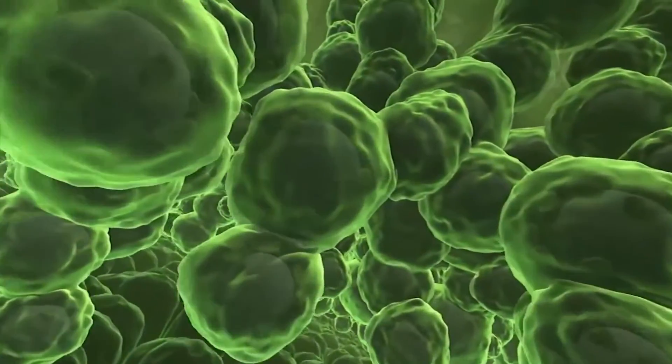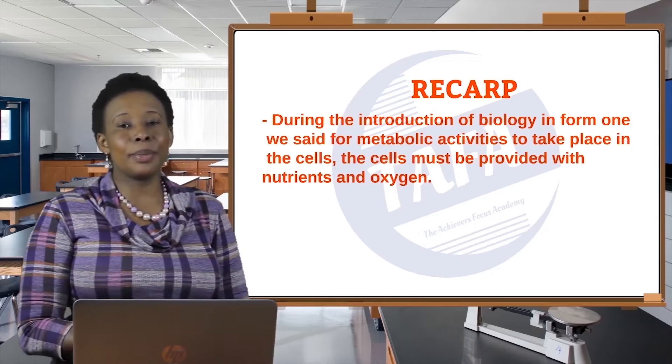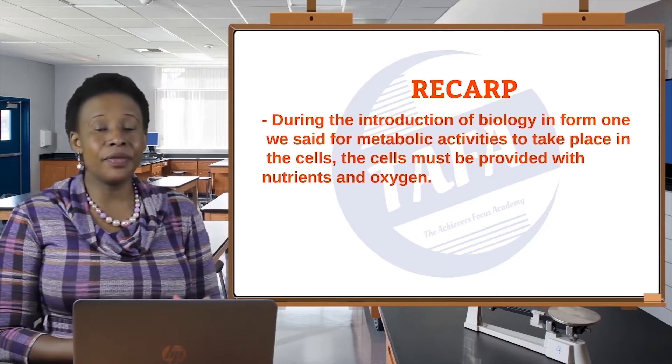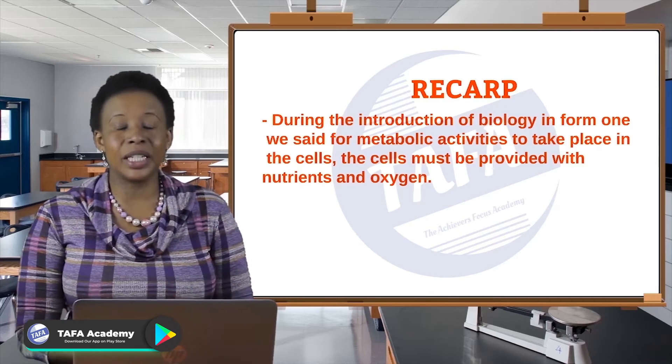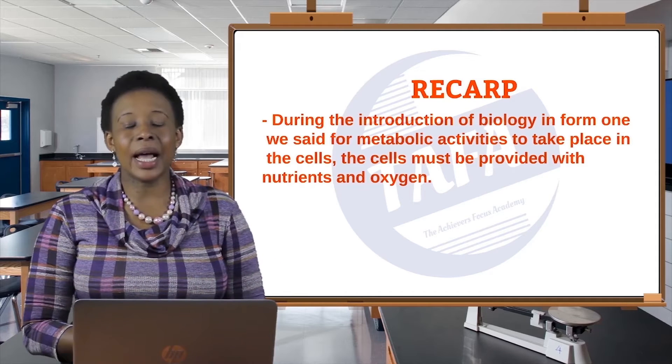This also includes removal of waste products of metabolism from their cells, for proper growth and proper functioning. To get into this topic, I want to do a brief recap on what we did in Form 1, where we talked about cells and metabolic activities. For metabolic activities to occur, cells must be provided with nutrients and oxygen.